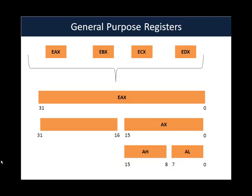There is one important thing you need to know about a few of the general purpose registers — namely EAX, EBX, ECX, and EDX. Any register in the IA-32 architecture is 32 bits. Now let's look at a property which EAX, EBX, ECX, and EDX share. It is possible to access the first 16 bits of EAX by referencing it as AX.